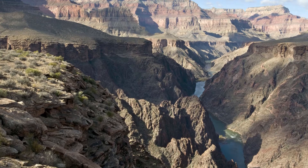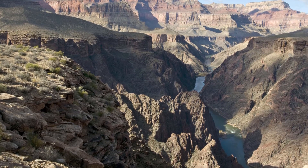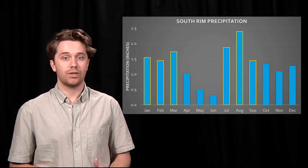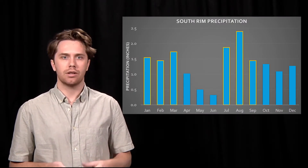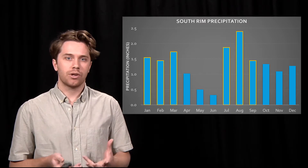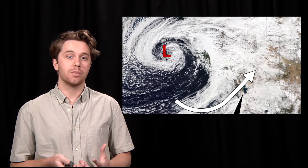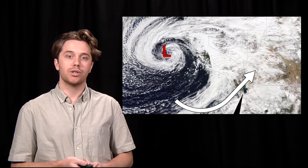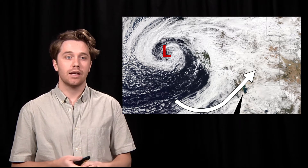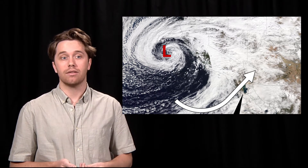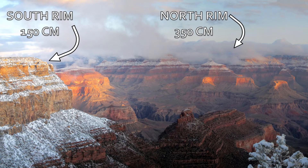The Grand Canyon, along with much of the southwest United States, sees seasonal pulses of precipitation in the winter and summer, separated by relatively drier periods in the spring and fall. In the winter, large Pacific low-pressure storm systems sweep across the region, pulling moisture from the Pacific and bringing soaking rains and snow to higher elevations. The higher and colder North Rim sees the heaviest snowfall, around 350 centimeters of snow annually — about 12 feet. While the South Rim receives about half that, 150 centimeters, or about 6 feet of snow.